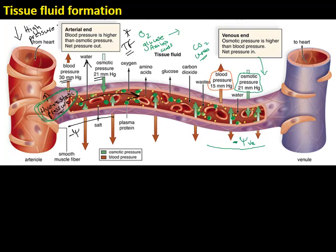When tissue fluid has drained back into the capillary, the blood exits via the venule. This blood will not have much oxygen, so the ppO2 — the partial pressure of oxygen — is very low, and the partial pressure of carbon dioxide is much higher, present as hydrogen carbonate ions.